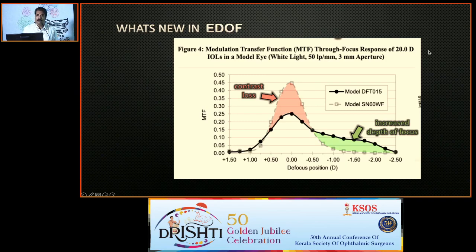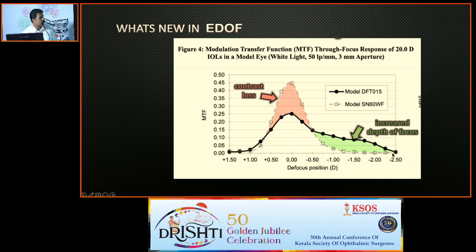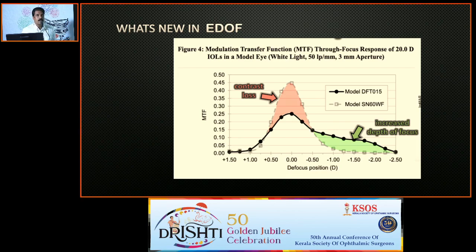Now the question is: what is EDOF and what is the difference? Looking at the EDOF graph compared to the enhanced monofocal graph, EDOF adds extra power in the intermediate range but reduces distance vision by a more considerable amount — a noticeable contrast loss at emmetropia. The depth of focus extends to around minus 2, giving better intermediate vision, perhaps up to 50 centimeters. In my practice, I have not seen an EDOF lens give true near vision. The intermediate vision is slightly better than enhanced monofocal, but the contrast loss is noticeably higher with EDOF.